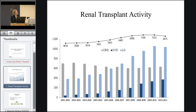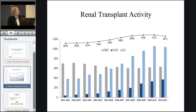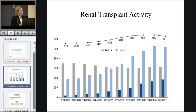This graph shows the renal transplant activity over the last 10 years. The line on the top represents the transplant waiting list. You can see that this is gradually increasing. Currently, only one third of people on that transplant list will receive a kidney transplant each year. Underneath, we have a bar chart of the different types of organ donors.